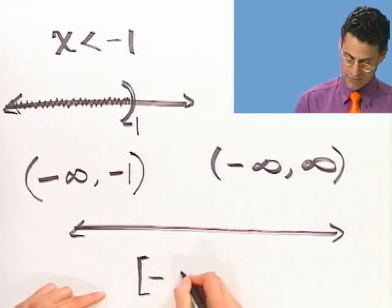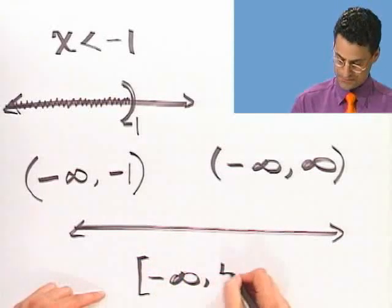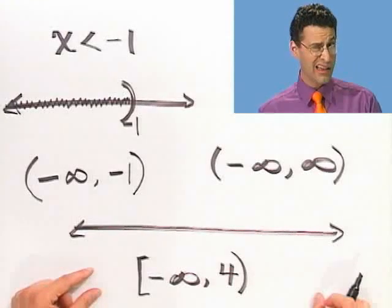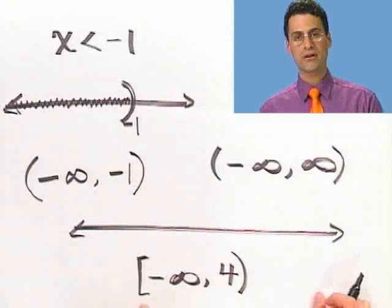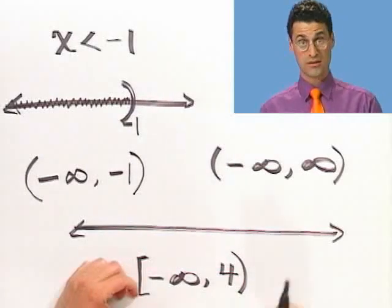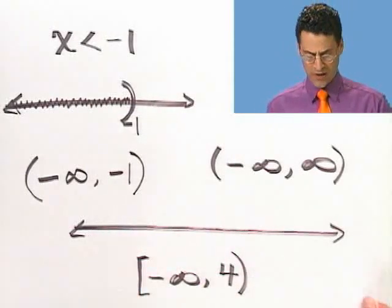What would this mean to you if someone wrote this to you? How would you respond? I hope you would respond huh, because you're never, never, never to use a bracket with the infinity thing. Always, always use a parentheses. Okay, let me just do one last one and we'll call it a day. What if I gave you the bracket notation?